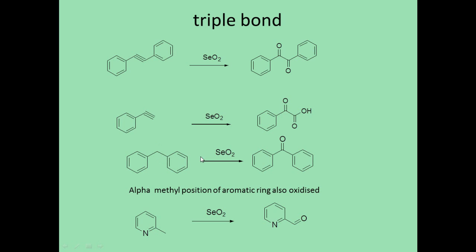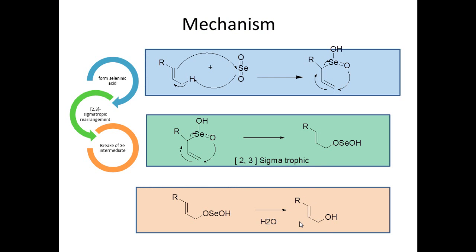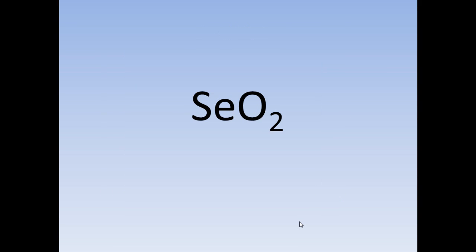The methylene group at the alpha position to an aromatic ring forms ketone groups. These alpha positions of aromatic methyl or methylene groups are converted into ketones or the corresponding aldehydes. These are the reactions of selenium oxide, which is a very versatile reagent in organic chemistry. Please like and subscribe to my channel — thank you for watching.